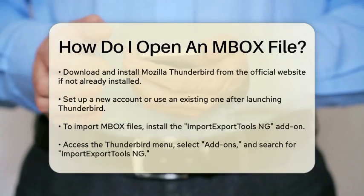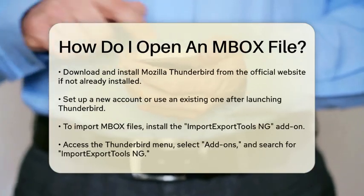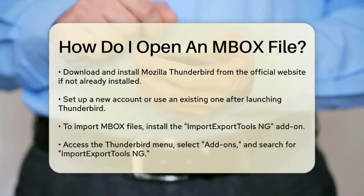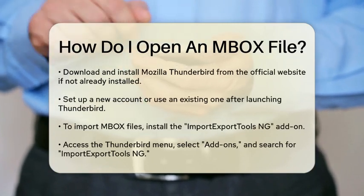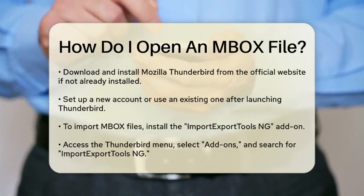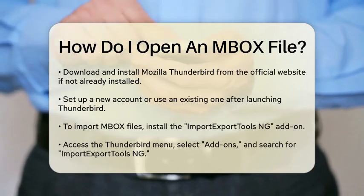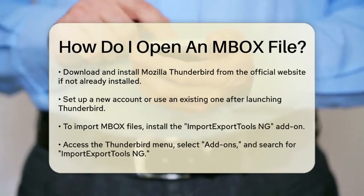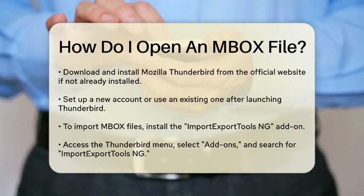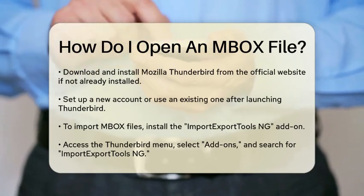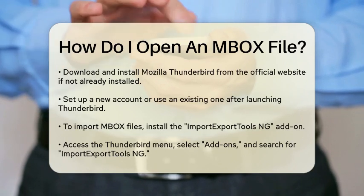To open an MBOX file, you will need an email client that supports this format. One of the most popular options is Mozilla Thunderbird, which is a free and open-source email application. If you do not have it installed, you can download it from the official Mozilla website. Once installed, you can proceed with the following steps.